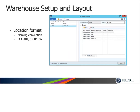The location format allows you to specify the naming convention for a location. In the example shown, our location format called Rack is set up so that the aisle number is two characters long, followed by a dash, then a two-character bay number, another dash, a one-character shelf, and a one-character position. At the bottom of the details section, you'll see an example of what the format looks like — two zeros, a dash, two zeros, a dash, and another two zeros. We'll generate location numbers using the location setup wizard where you'll see more examples of this format.